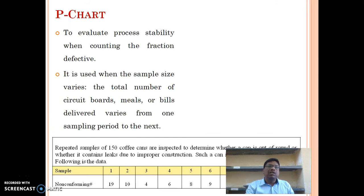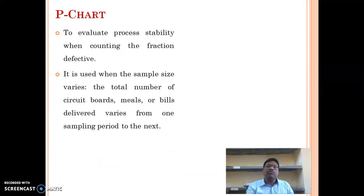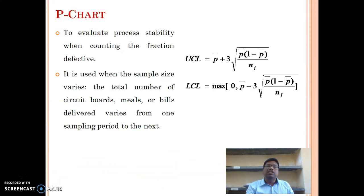The P chart is used to evaluate process stability when counting the fraction defective. It is used when the sample size varies — for example, when the total number of circuit boards, meals, or bills delivered varies from one sampling period to the next. Here is an example of a P chart showing UCL and LCL.